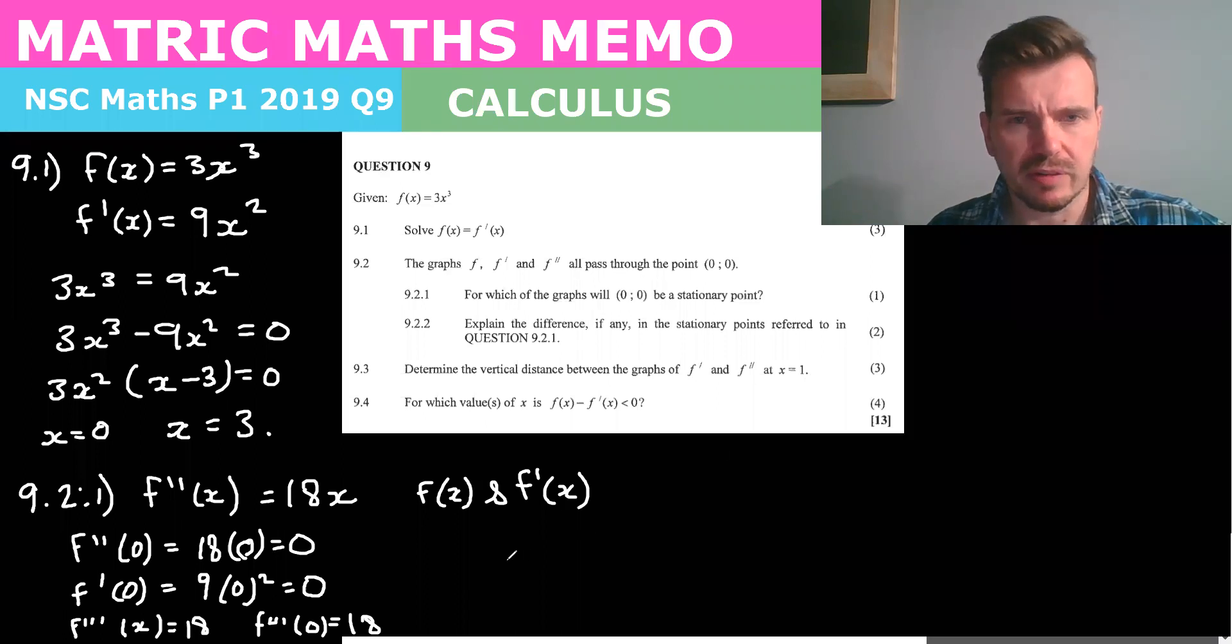Okay so now let's look at these graphs quickly because it says explain the difference in the stationary points referred to in question 9.2.1. I'm not seeing any major differences here so if we draw the graph of f of x, if we substitute in one for x there is going to be a bit of a difference. If we substitute in one for x we get y to be three and if we substitute in two, two cubed is eight, we get 24 so it's going sort of upwards like that and if we substitute negative, y becomes negative because it's a cubic graph so it kind of goes like this.